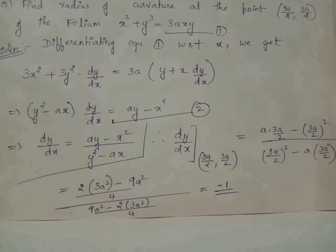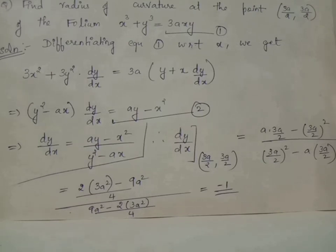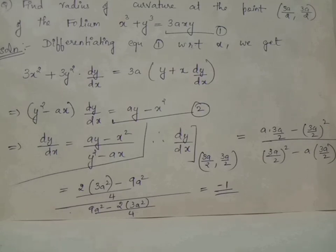Bringing terms containing dy/dx to the LHS and terms independent of dy/dx to the RHS, we obtain (y² − ax)·(dy/dx) = ay − x². Calling this equation 2, we get dy/dx = (ay − x²) / (y² − ax).